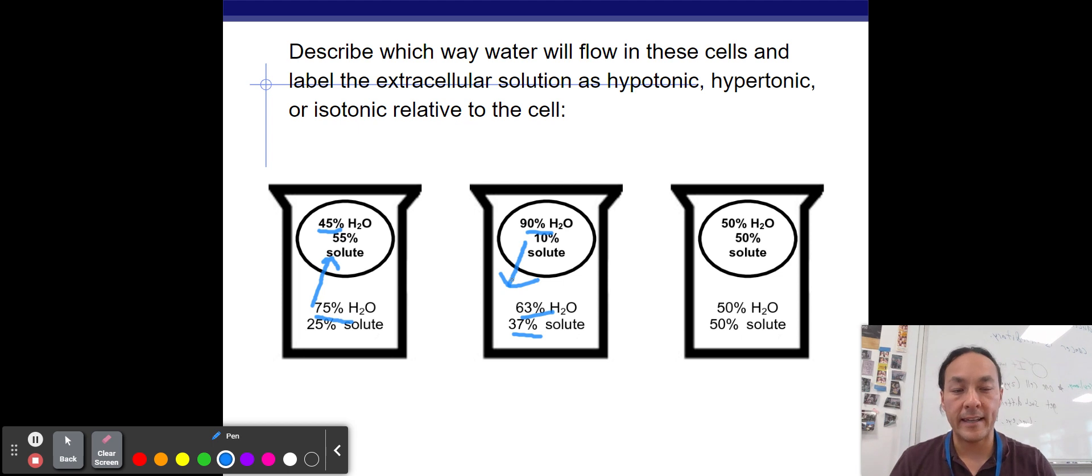Both of these situations can lead to the death of the cell. If the cell loses all its water, it's not going to work and it's going to die. If the cell gains too much water, it could eventually burst in a process called lysis.